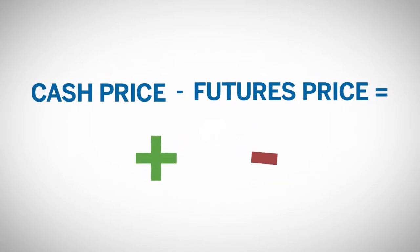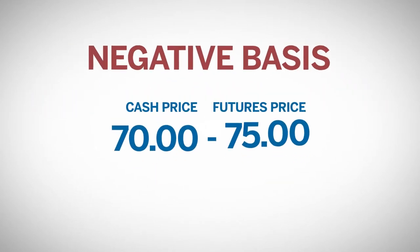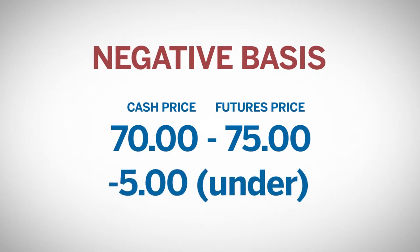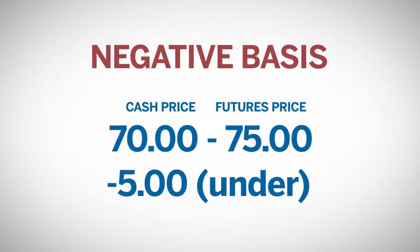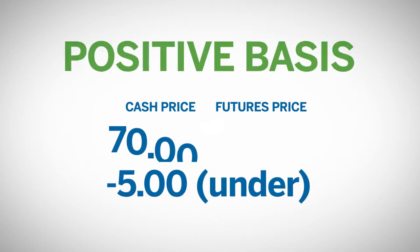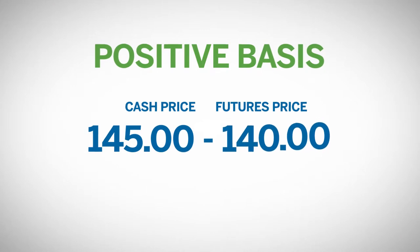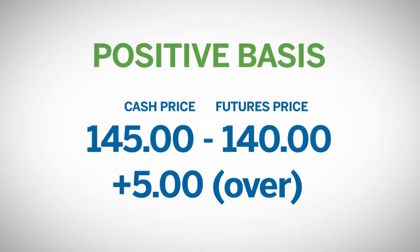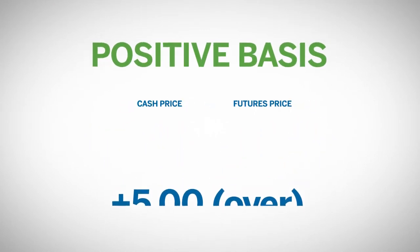The basis can be either positive or negative. A negative basis is referred to as being under — in other words, the cash price is under the futures price. A positive basis is referred to as being over — that is, the futures price is lower than the cash price.